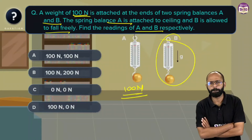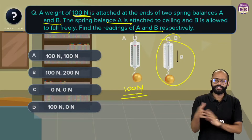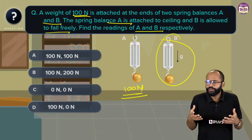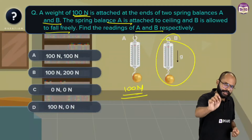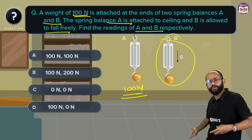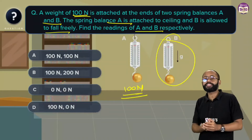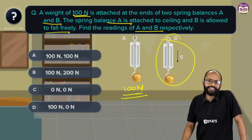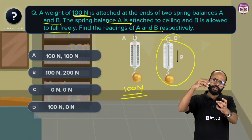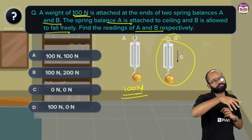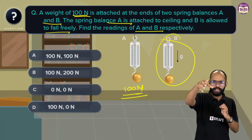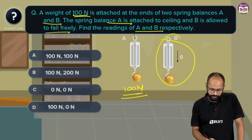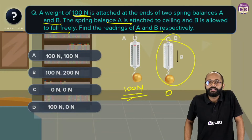What does B read? B is freely falling. Whenever a body falls freely, it experiences weightlessness. With that logic, when a body is freely falling its weight becomes zero — the force becomes zero — so spring balance B reads zero. You can try this: take a plastic glass, put a ball inside it, and drop it. The ball remains at its position. So the answers are 100 newtons and zero.